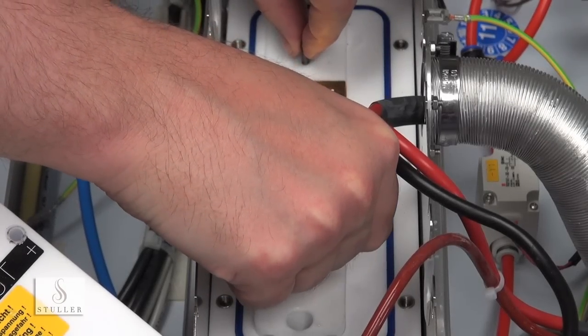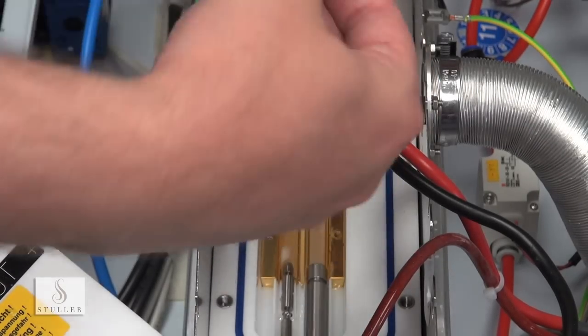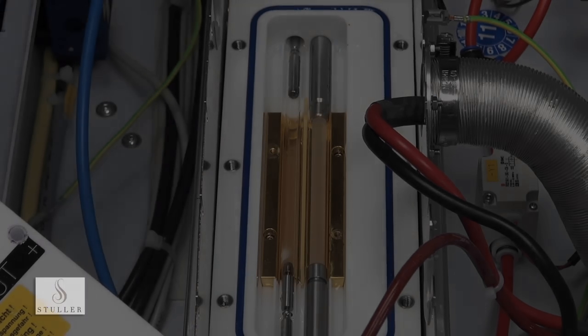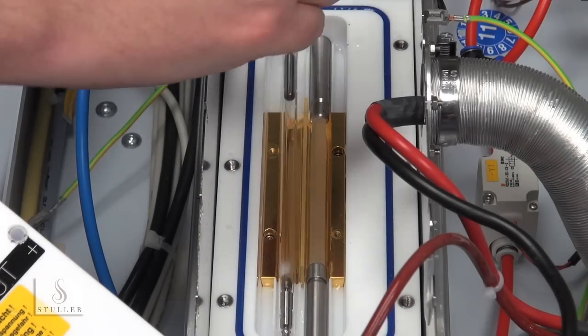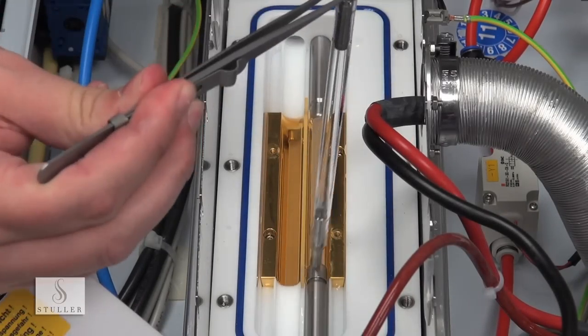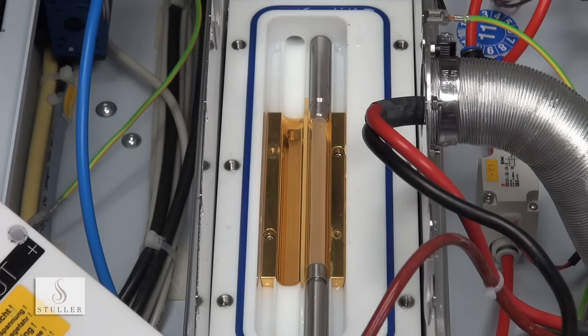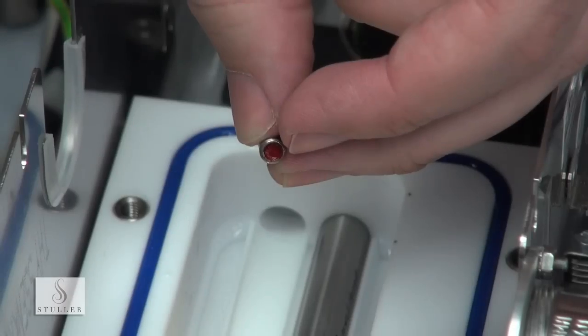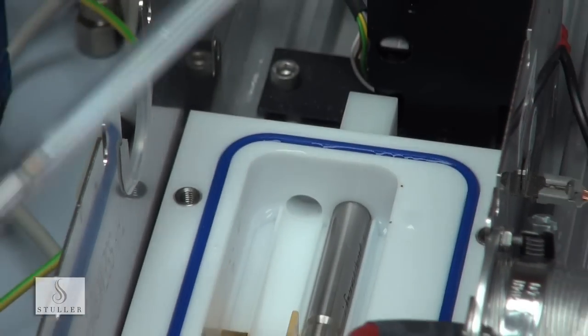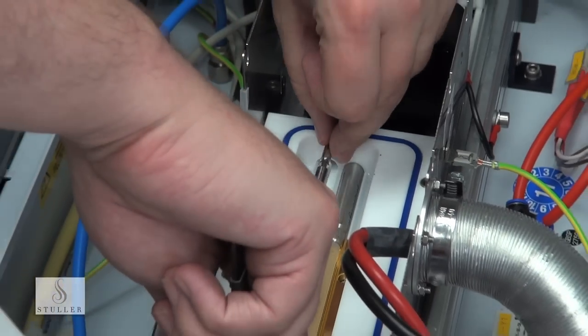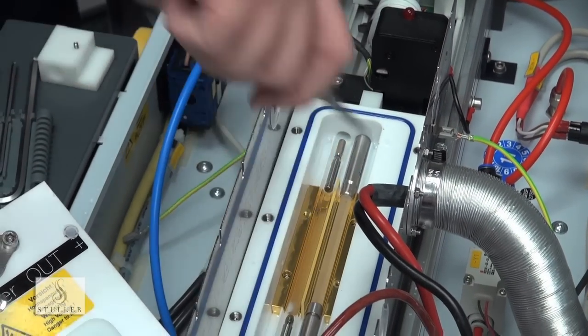Lift up the gold plated chamber, pull the flash lamp out, put in the new flash lamp making sure the red dot goes to the front of the laser welder. Do not touch the flash lamp with your bare hands.